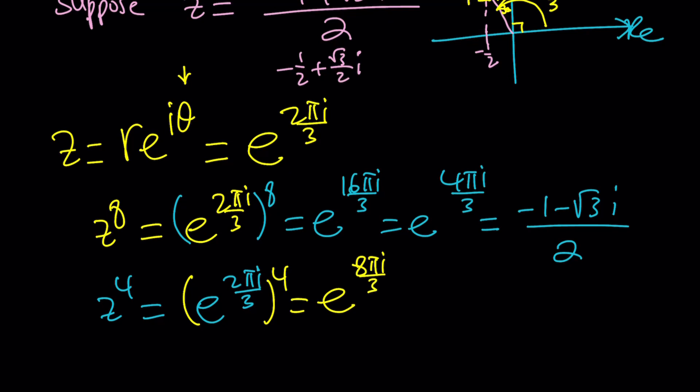That's going to give us e to the power 8 pi i over 3. Again, we can take out multiples of 2 pi, which happens to be 6 pi over 3. That leaves us with e to the power 2 pi i over 3. That's kind of expected because z to the fourth is supposed to be one of the square roots of z to the eighth. So you could just cut this in half. And this happens to be the original number z, which is 120 degrees or negative 1 plus root 3 i over 2.